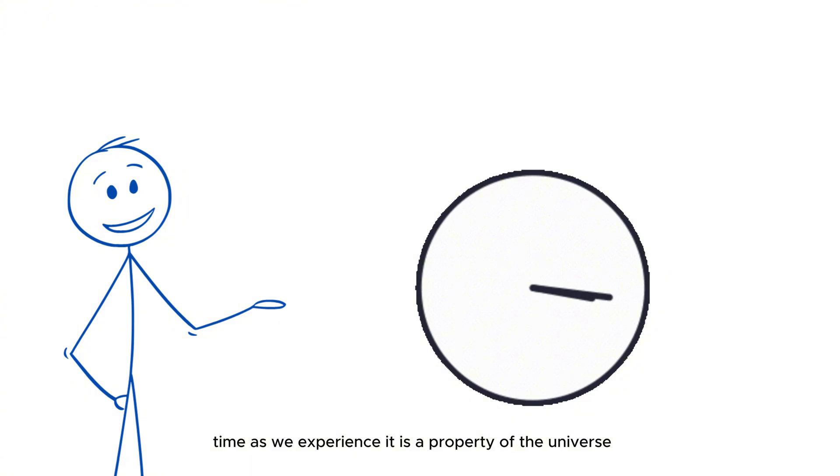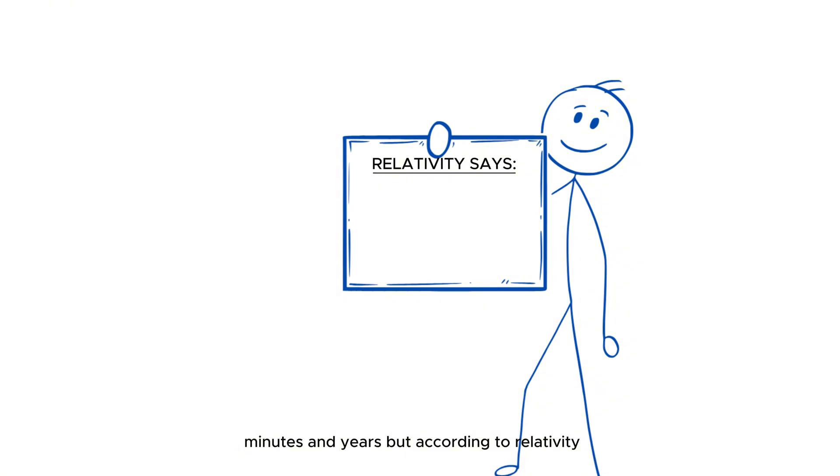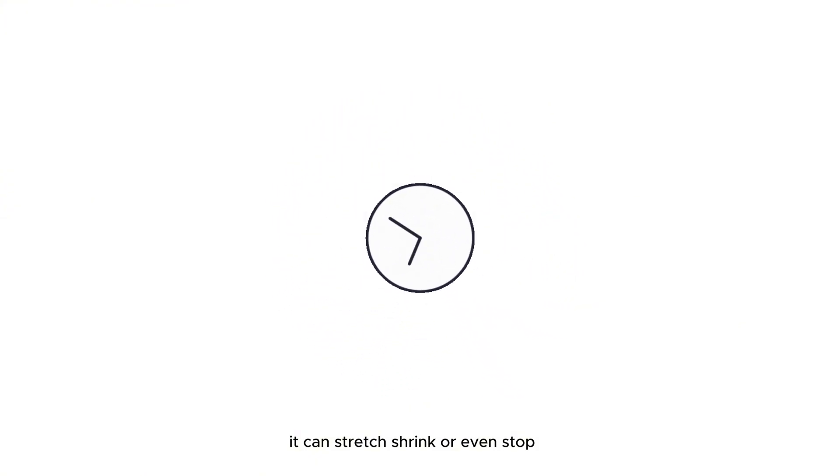Time, as we experience it, is a property of the universe. It flows forward, and events are measured in seconds, minutes, and years. But according to relativity, there's no such thing as an absolute universal clock ticking in the background. Instead, time is relative. It can stretch, shrink, or even stop.